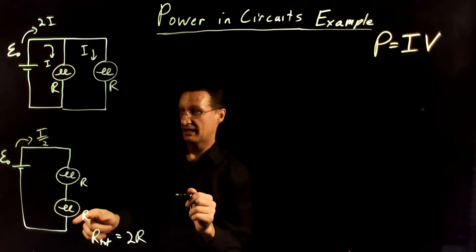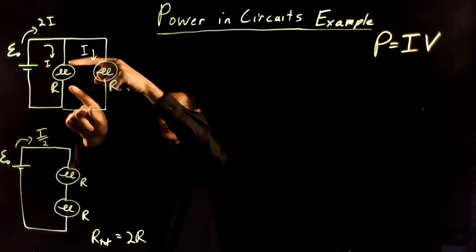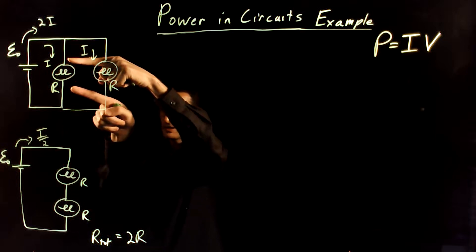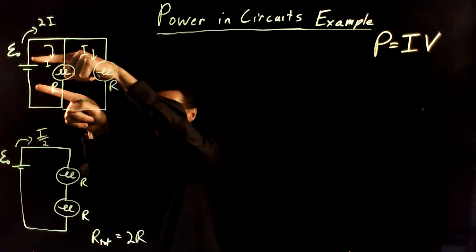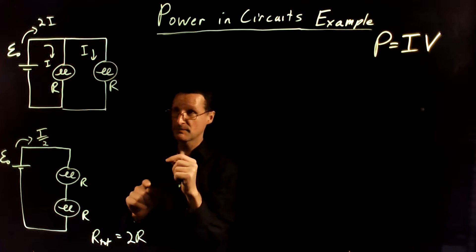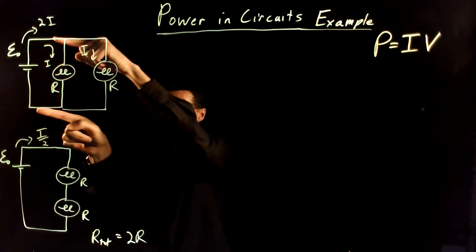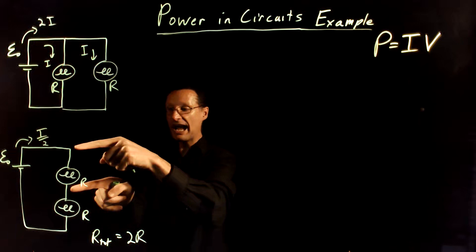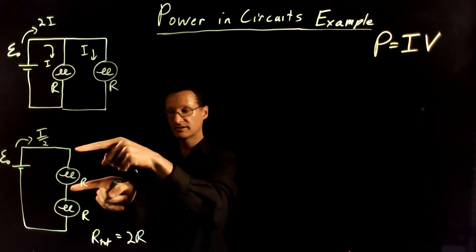In addition to that, the voltage drop across this first bulb here is going to be the same as the voltage drop across the battery. Same for this one. It's going to have the same voltage drop. Whereas this one, half of the voltage drop is going to occur across the battery, across the first light bulb,